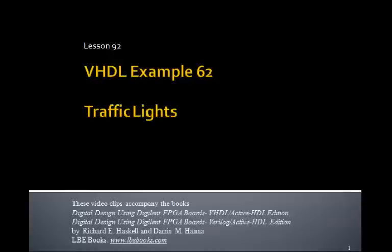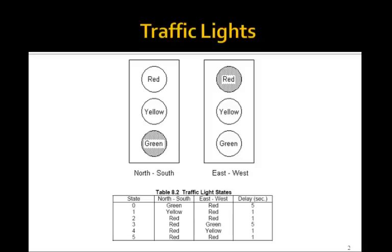This is lesson 92, VHDL example 62. This one's on traffic lights. We're going to try to simulate a pair of traffic lights, the north-south ones and east-west.